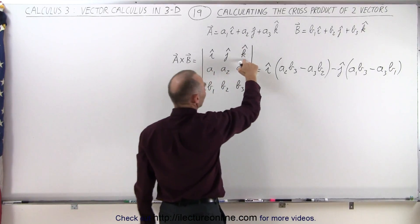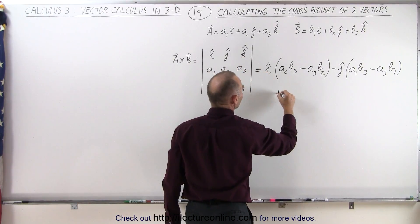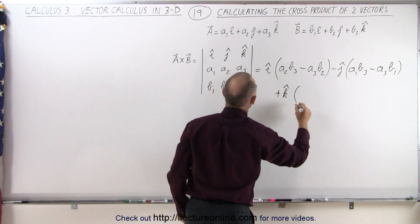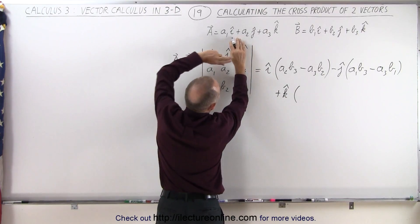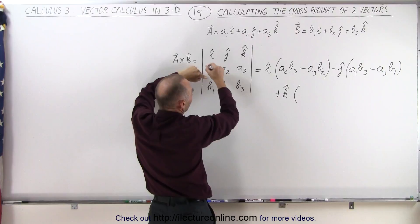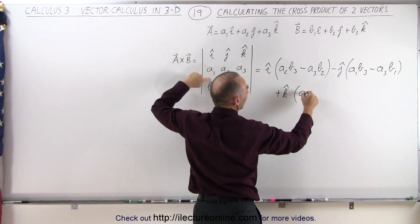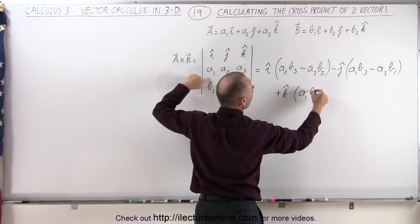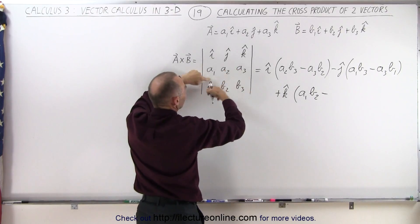And finally, you get rid of this column and this row that leaves you with these four elements, so you multiply these two together, which is A1B2 minus the product of these two elements, which is A2B1.